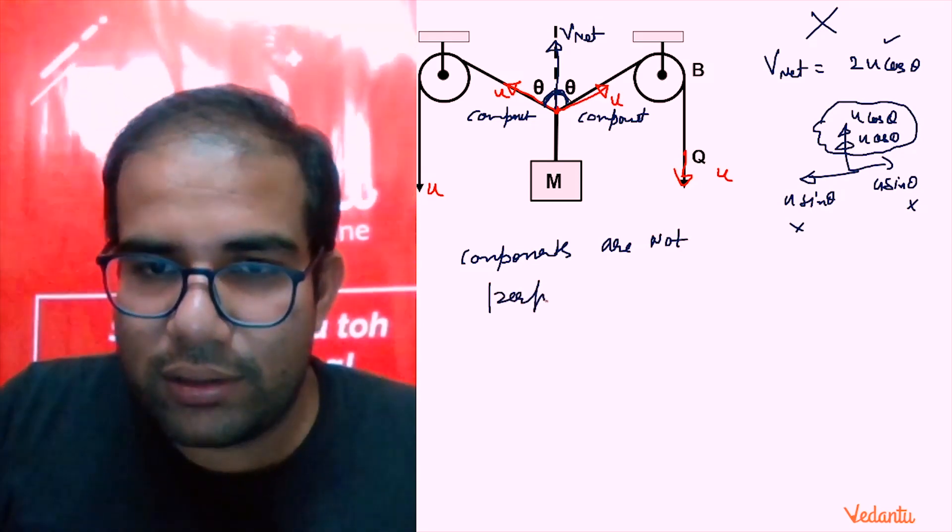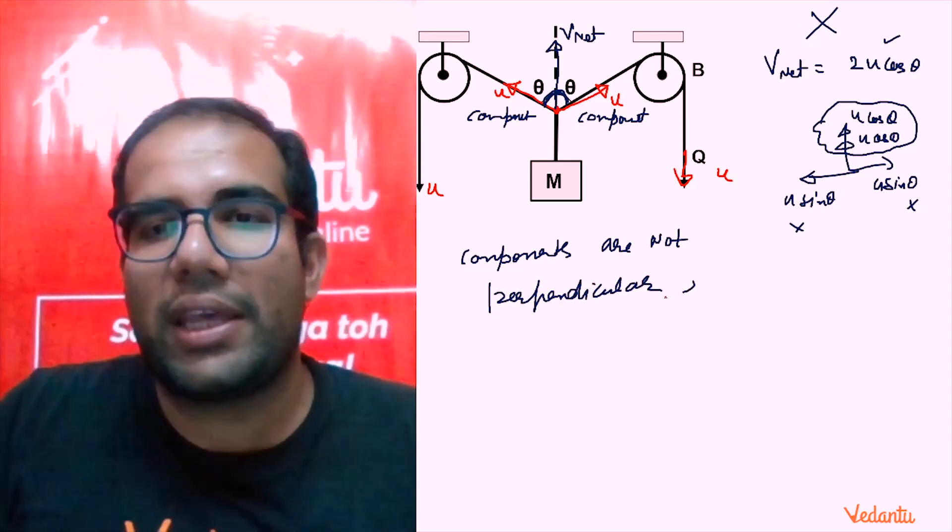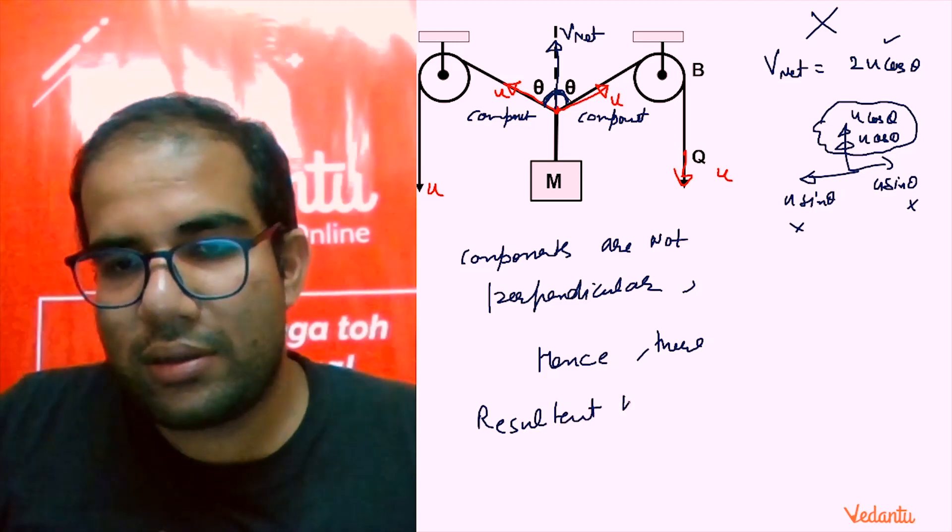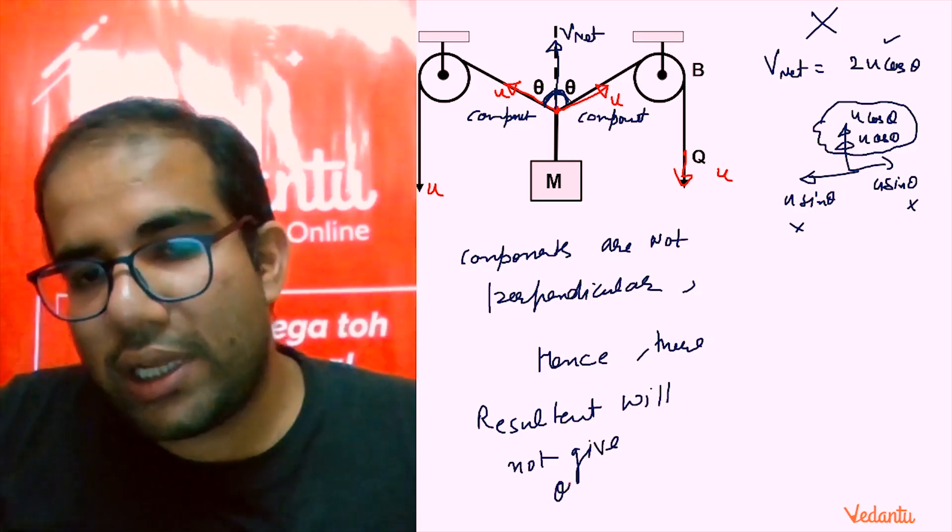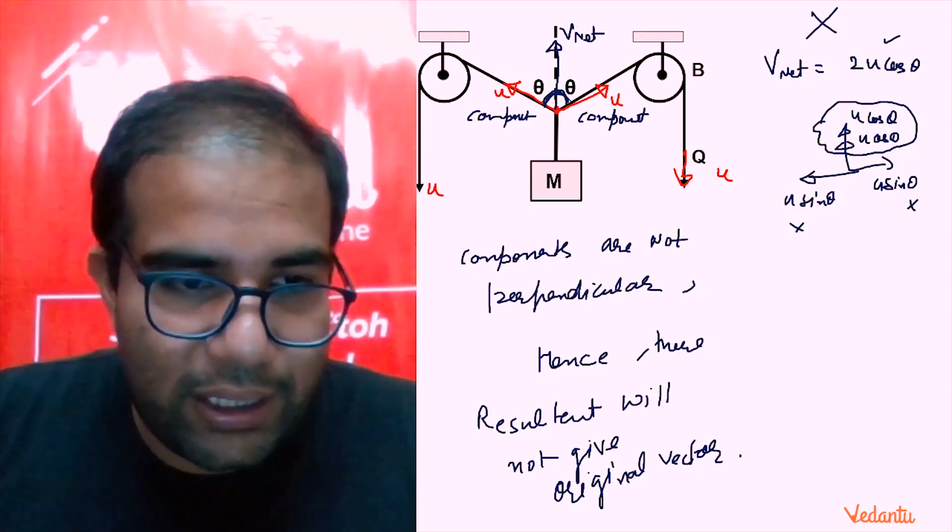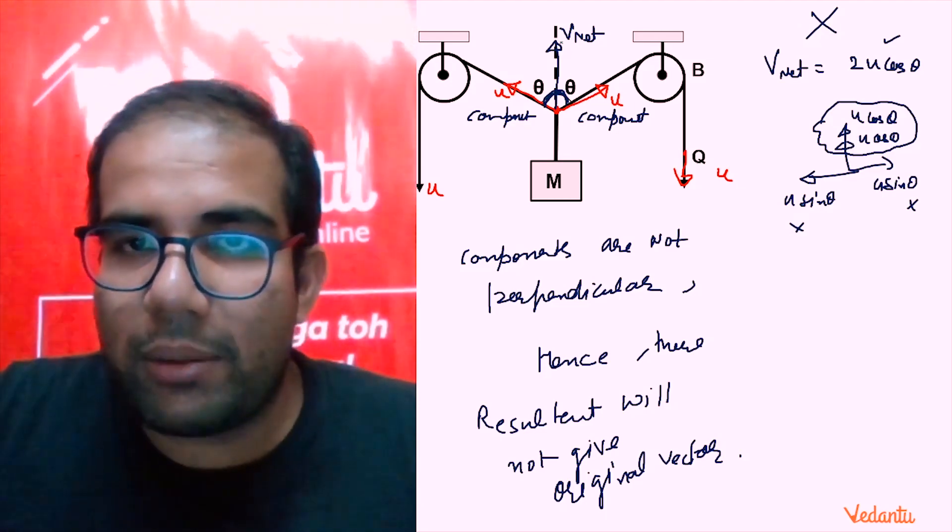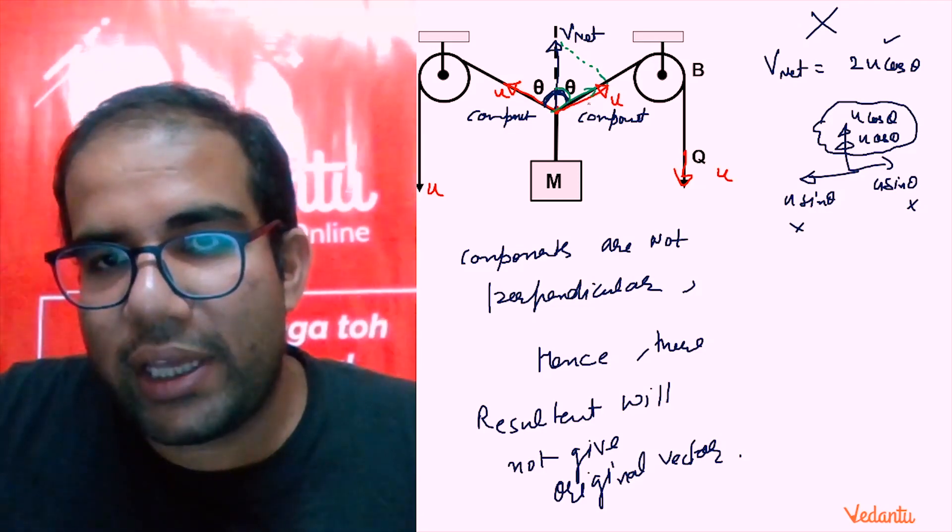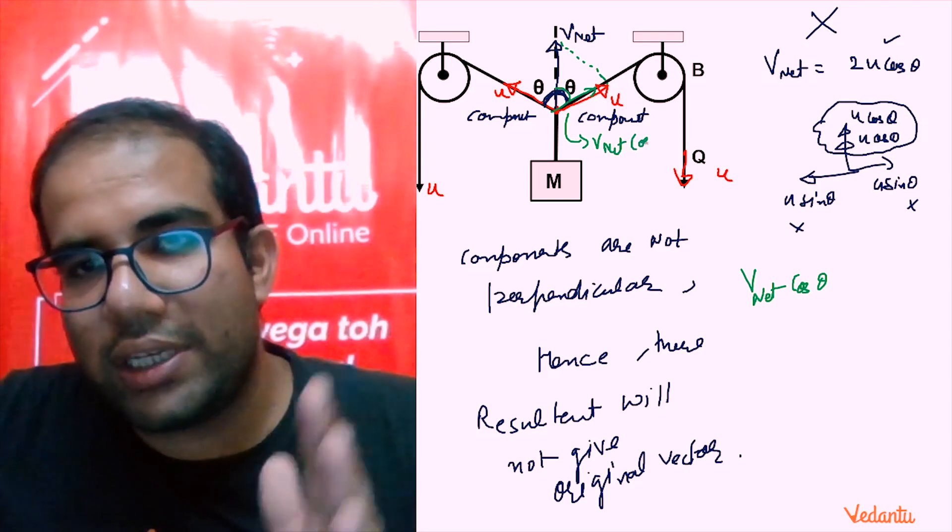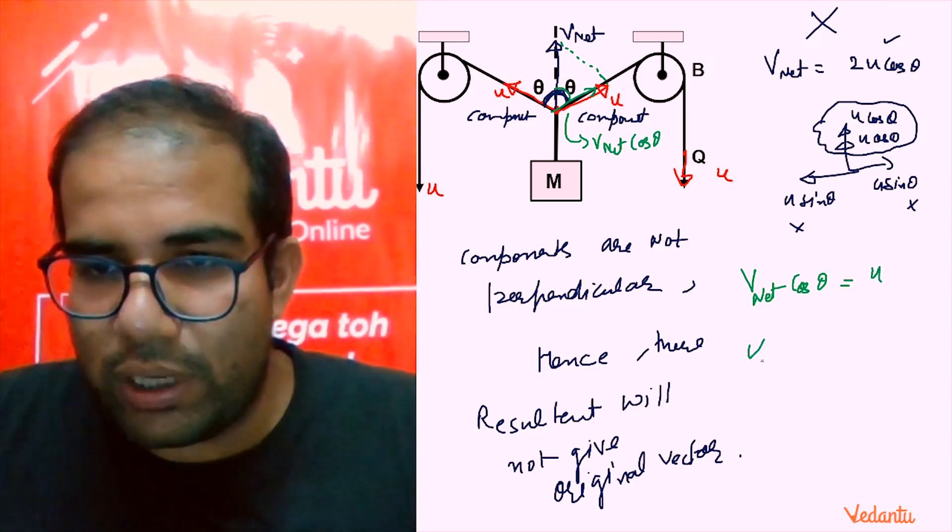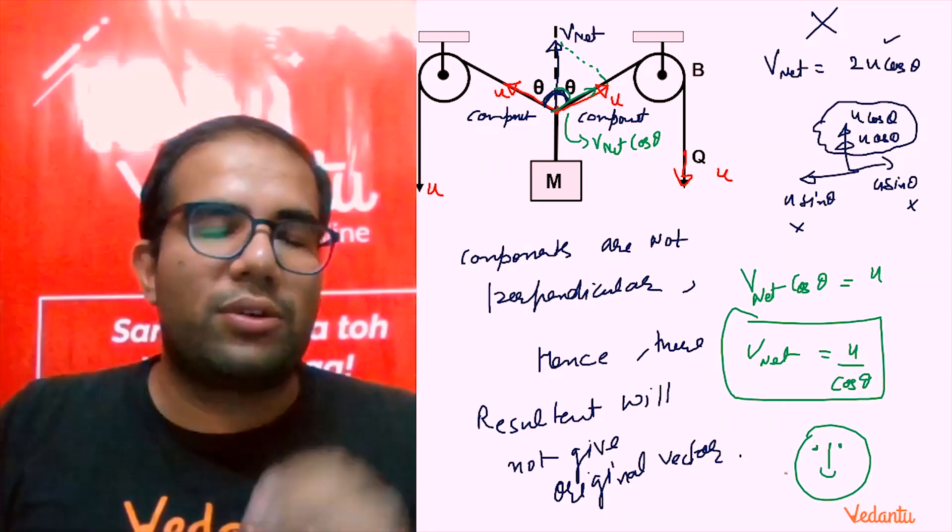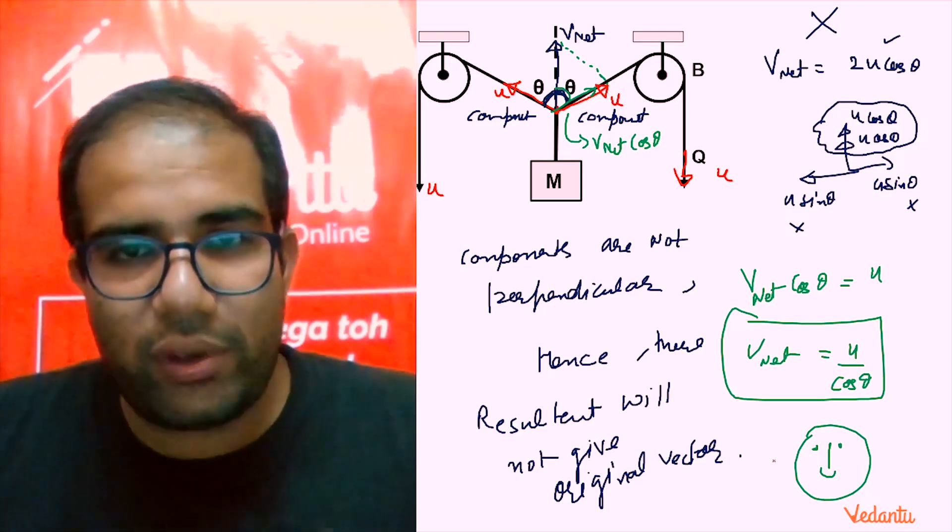But you cannot give this answer. Why can't you do this? Because this is my component and that is my component. So the components are at 2 theta angle with each other, not 90 degrees. The components are not perpendicular, so their resultant will not give the original vector. So how will we get it sir? It's very simple. The component of v_net that falls in the theta direction will be v_net cos theta, and that component is U. So the answer will be v_net is U upon cos theta. The point is that IIT has also touched these kinds of minute concepts, and we students have to be very careful while handling these questions.